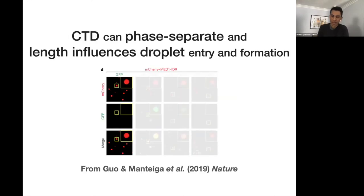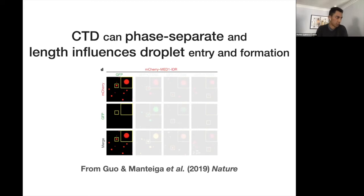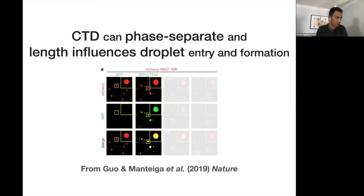As I was doing these experiments, it became difficult to ignore that the CTD can phase separate, like many other disordered proteins. In particular, CTD length influences phase separation dynamics. In this example from Guan Montiga, I show droplets formed by a protein called MED1 — its disordered domain fused to mCherry. GFP alone is uniformly distributed and can't be seen in these conditions. However, if you attach a long CTD to GFP — in this case a 52-repeat CTD — these proteins immediately go into the MED1 droplets.